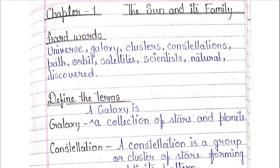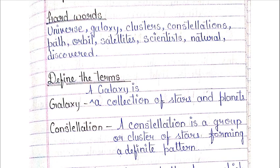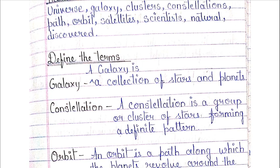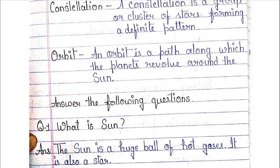Hard words to practice: universe, galaxy, cluster, constellations, path, orbit, satellite, scientist, natural, and discovered. Define the terms: Galaxy — a collection of stars and planets. Constellation — a group or cluster of stars forming a definite pattern. Orbit — a path along which the planets revolve around the sun.